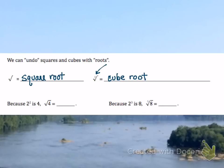Because 2 squared is 4, the square root of 4 is 2 — you're just undoing squaring. Because 2 cubed is 8, the cube root of 8 is 2. There we're just undoing taking to the 3rd power, or undoing cubing.